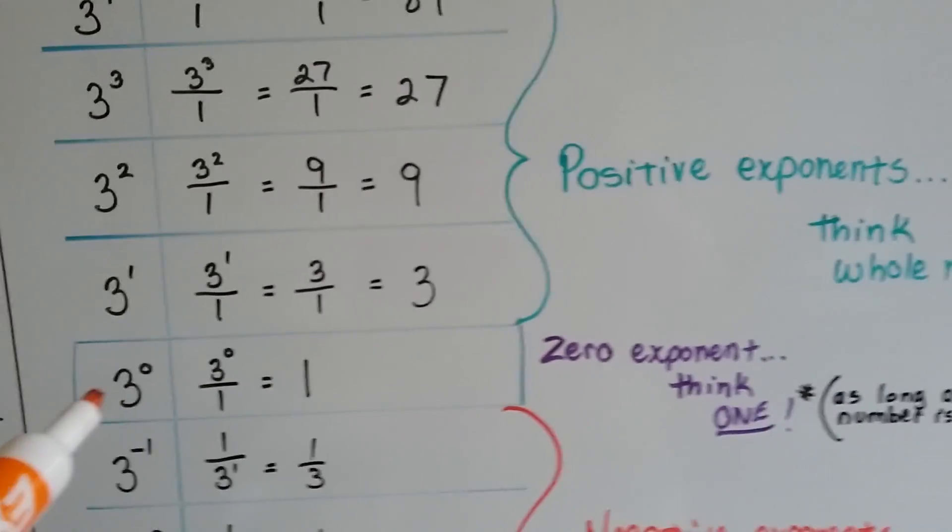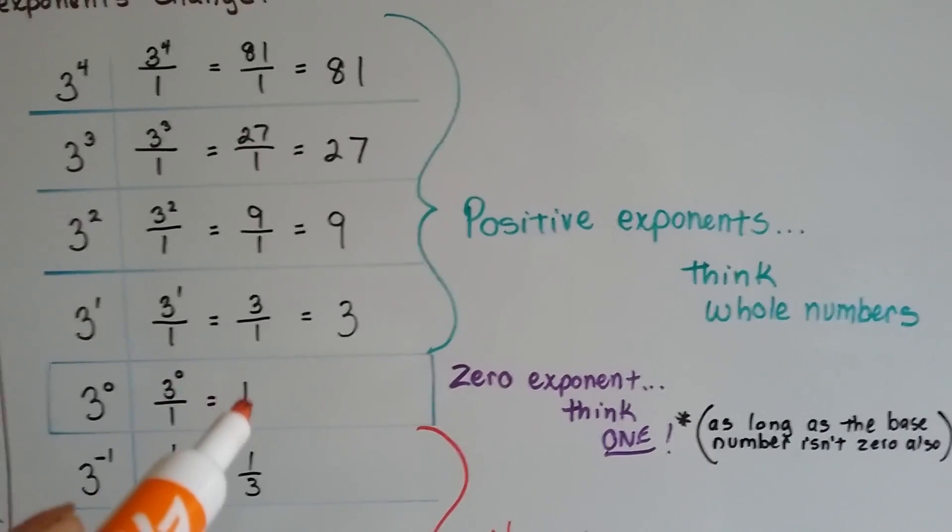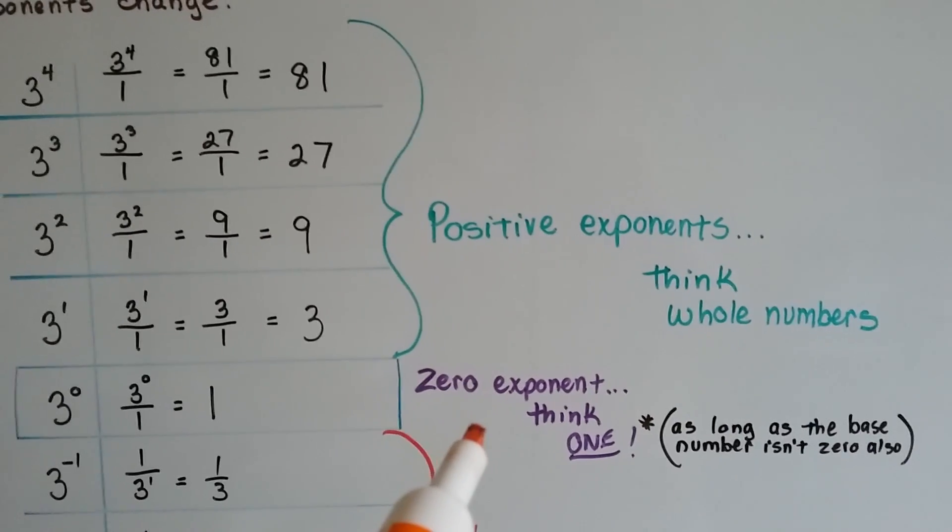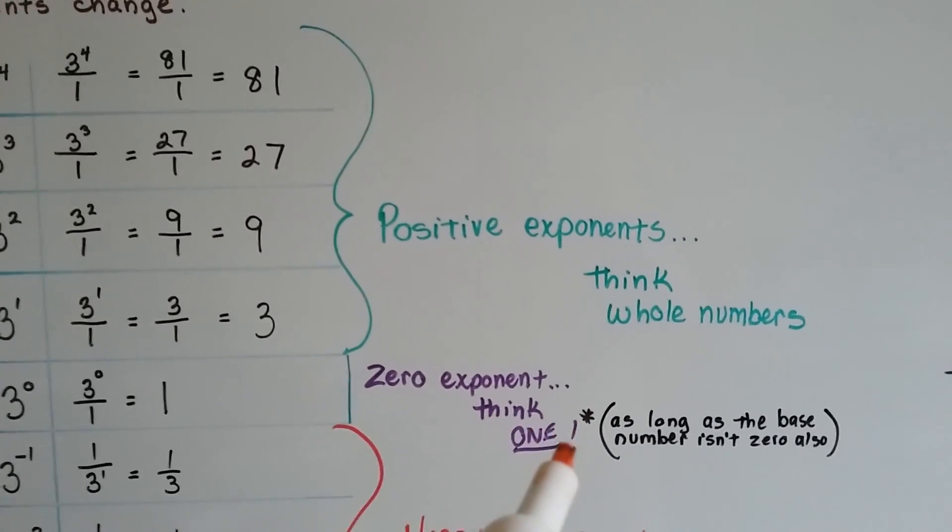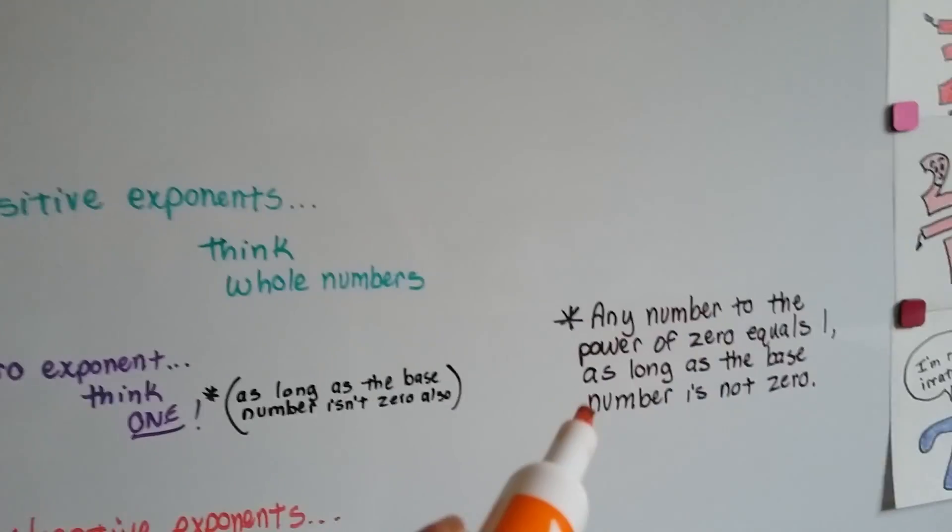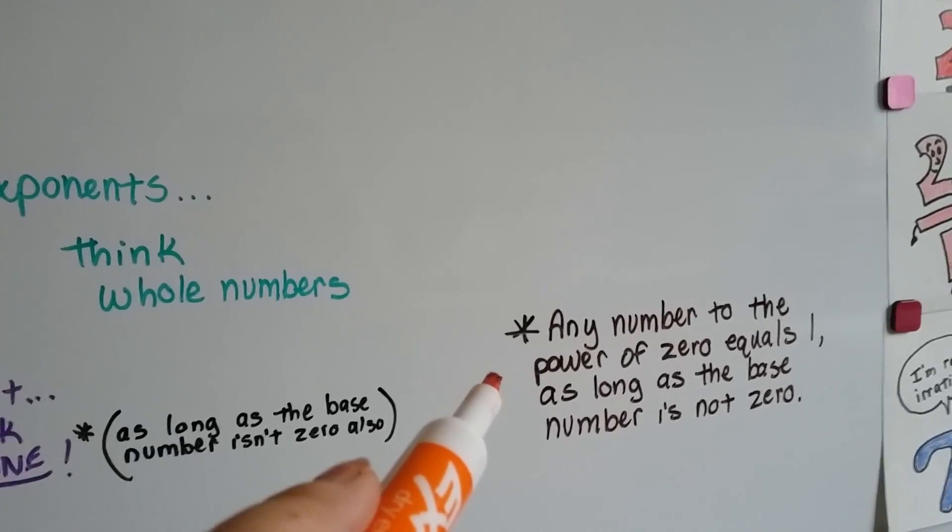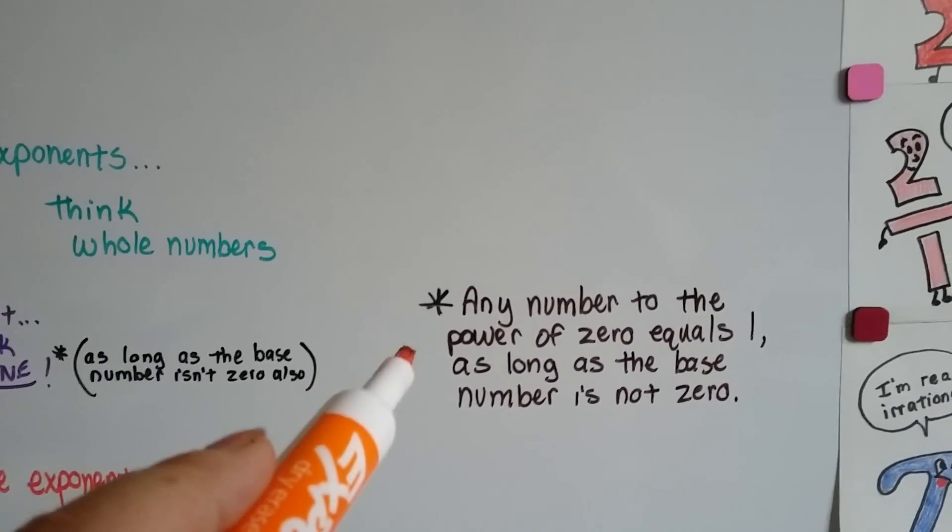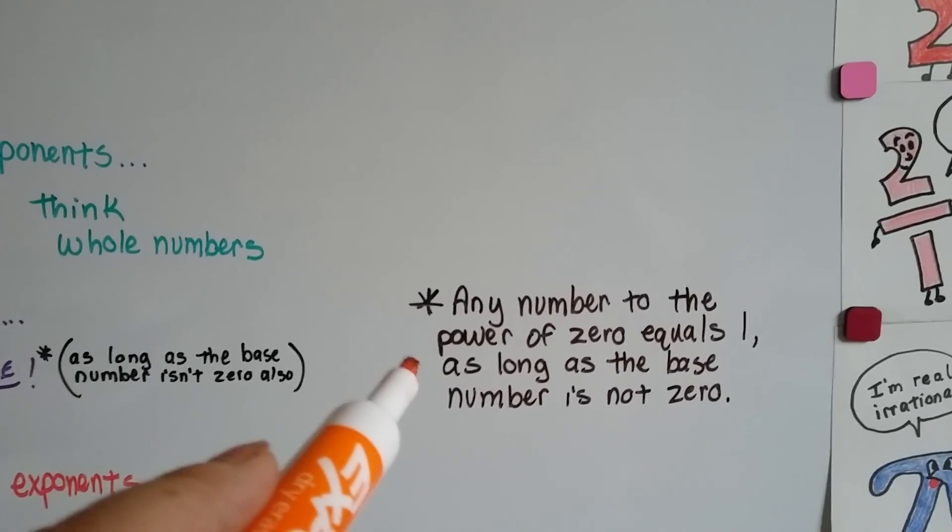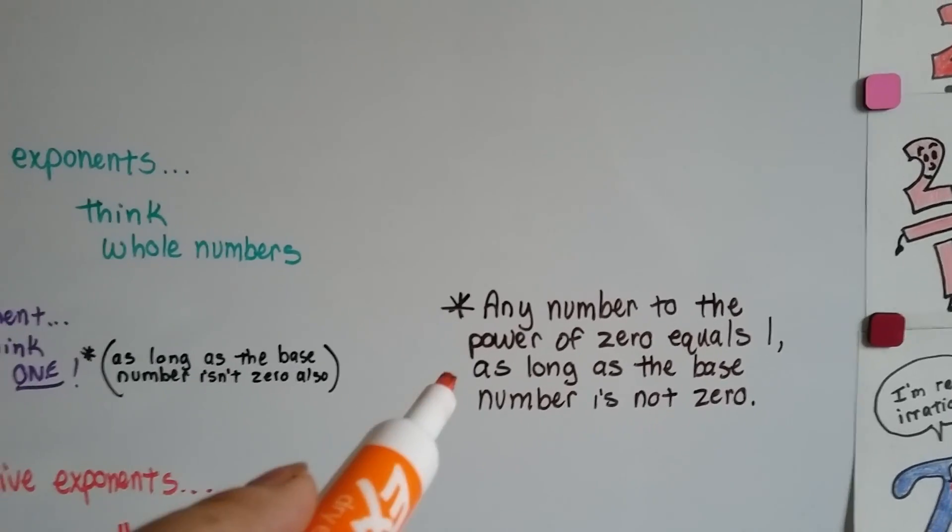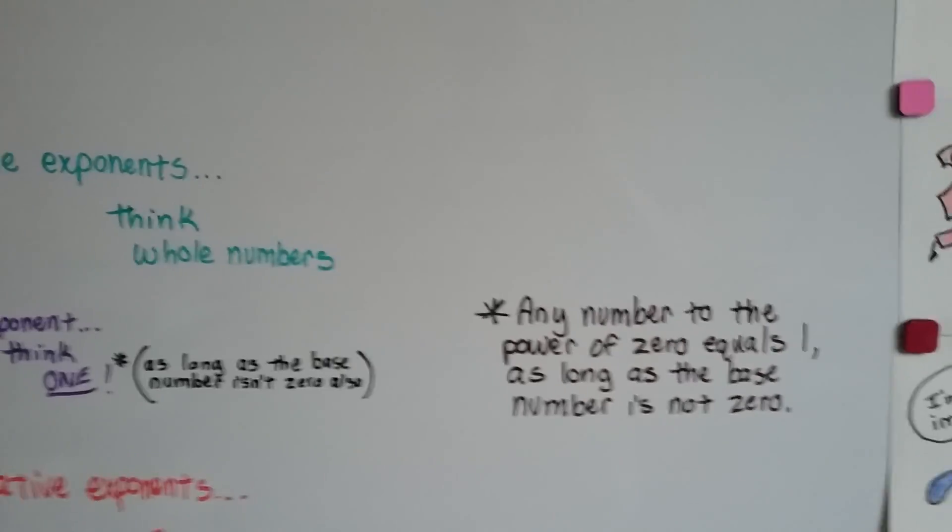But when we get to 3 to the zero power, that's going to equal 1. Again, there's a zero exponent rule that says that as long as the base number is not 0, it's going to equal 1. Any number to the power of 0 equals 1 as long as the base number is not 0. I'm going to talk about that more in the next video.